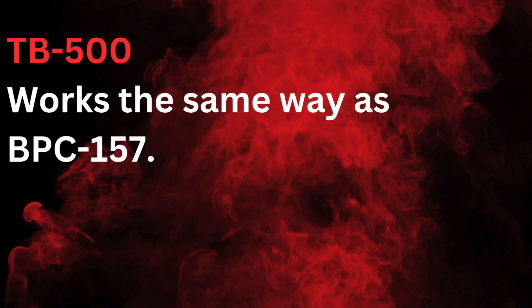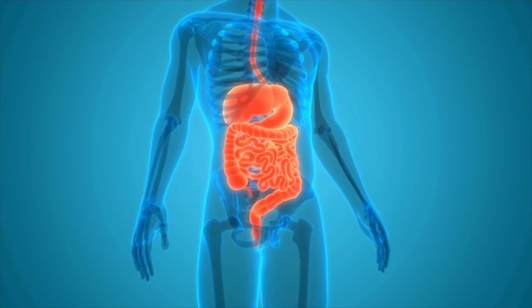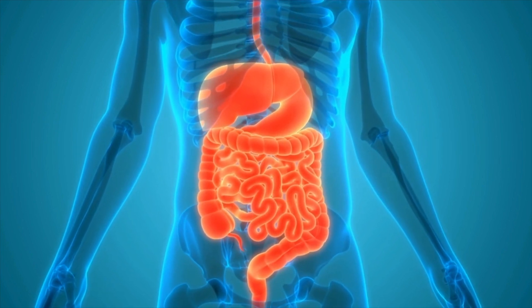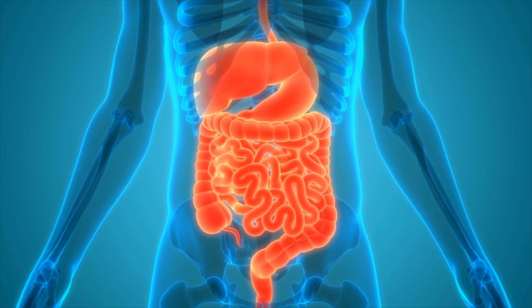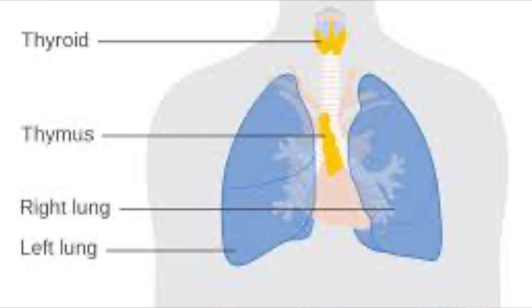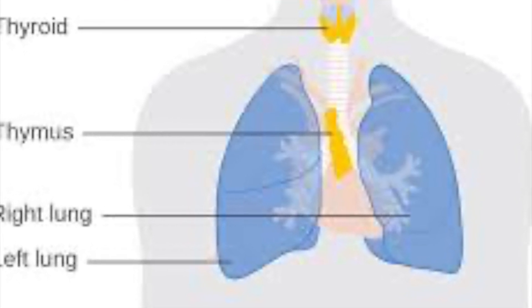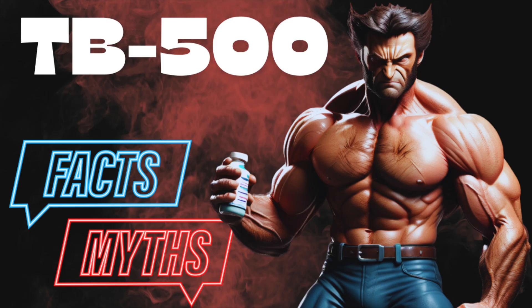Next prompt: TB500 works the same way as BPC-157. This is neither really fact nor fiction, but a mildly accurate idea based off of what we know — which is, of course, very little. They are different compounds derived from different sources. While BPC-157 was isolated from human gastric acid, TB500 is a chip-off of TB4, which was initially found in the thymus but discovered to be more ubiquitous. And given the paucity of research on TB500 compared to TB4, we know a lot more about the larger compound than its popular fragment.